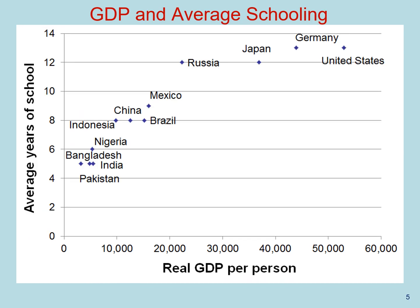Another indicator of a society's well-being is their education. Just like before, I could draw a straight line trying to capture the relationship between real GDP per person and average years of school. And as you can see here, there is also a positive correlation between these two variables. I'll be careful to say that it is not entirely clear here whether real GDP per person is causing an increase in the average years of school or the other way around. Yet, an increase in real GDP per person is associated with an increase in average years of school. So more income as measured by real GDP per person accompanies a higher level of education in the population.